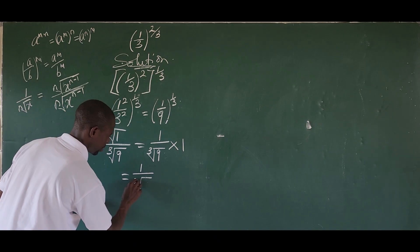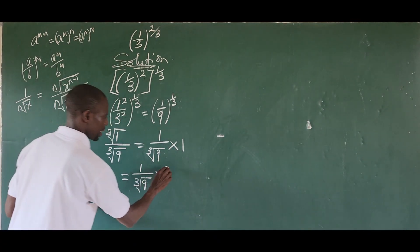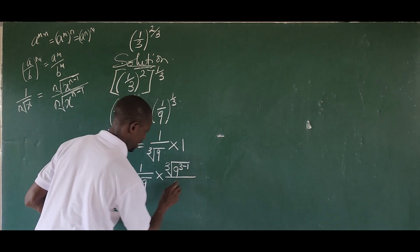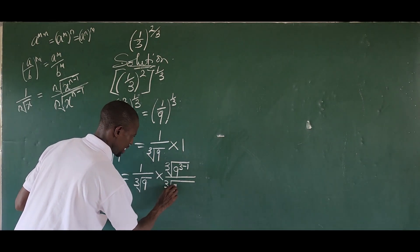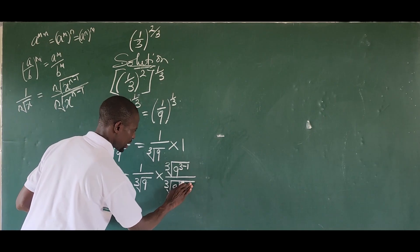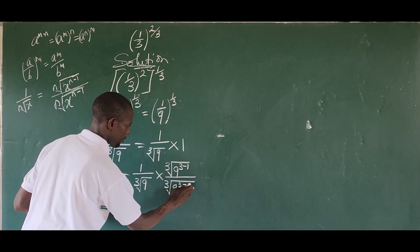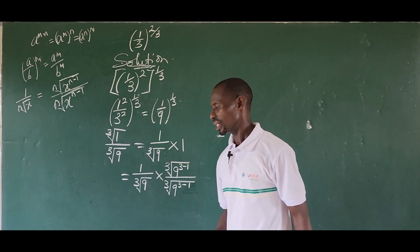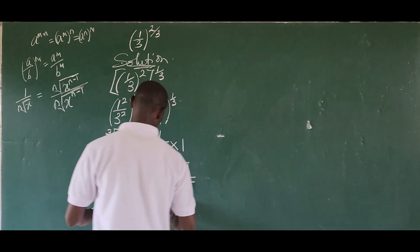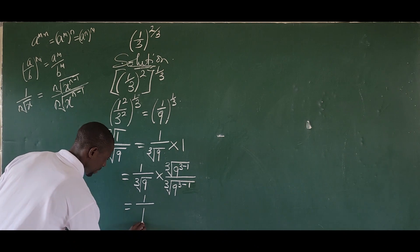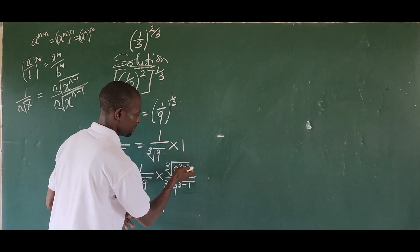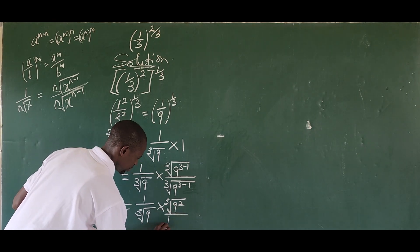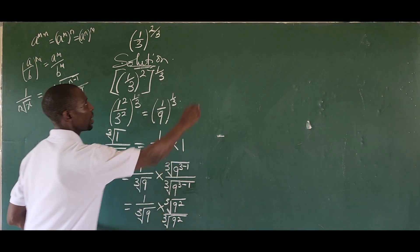So this is going to give us one all over the cube root of nine, times the cube root of nine raised to three minus one, all over the cube root of nine raised to three minus one. The numerator and denominator cancel to give one, and three minus one gives two, so we have the cube root of nine to the power of two, all over the cube root of nine to the power of two.